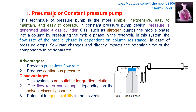The first type is the pneumatic or constant pressure pump. This is the most simple, inexpensive, and easy to operate pump design. Pressure is generated using a gas cylinder; gas such as nitrogen pumps the mobile phase into the column by pressurizing the mobile phase from the solvent reservoir. In this system, the flow rate of the mobile phase is dependent on column system resistance. In case of pressure drops, the flow rate changes and directly impacts the retention time of the component to be separated.